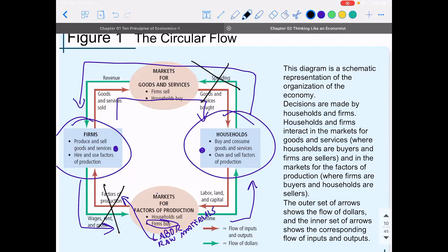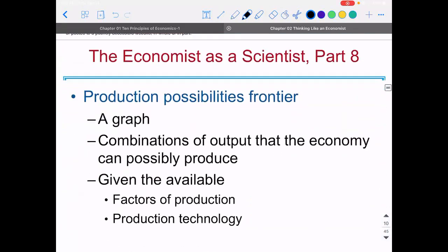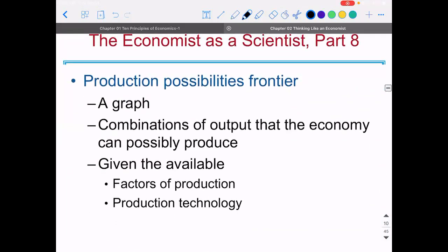Economists study the circular flow model to find points where the economy starts to falter and where the flow breaks down. Another important model economists build is called the production possibilities frontier.